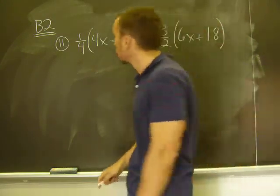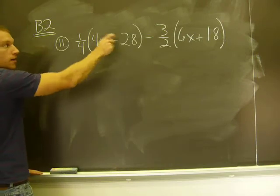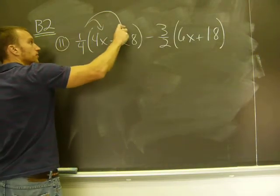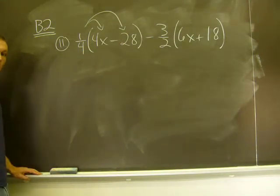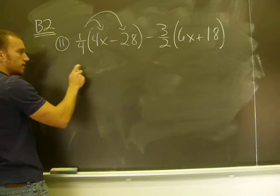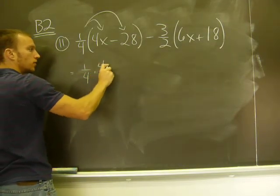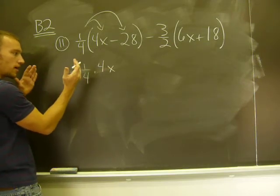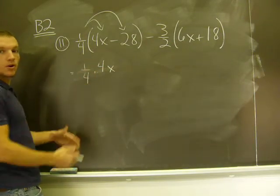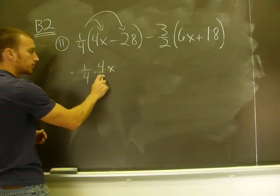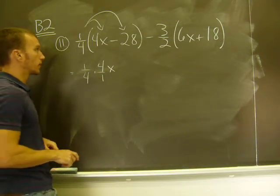So first the distribution, that is one-fourth times those two terms or numbers. And how I'm going to write this is like this. It's one-fourth times four X. Multiplying a fraction by a whole number, what I want to do is make that whole number a fraction. I'll put it over one.